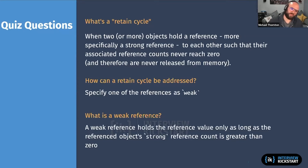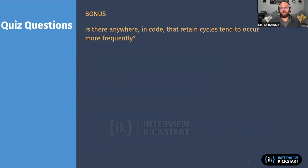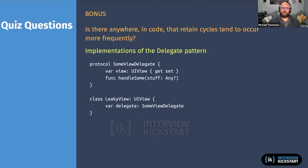As a bonus question: where in code do retain cycles tend to occur? One common place is implementations of the delegate pattern. Another is child view controllers. Delegates don't have to be the only case — async calls and completions in general are also common locations where retain cycles tend to appear.